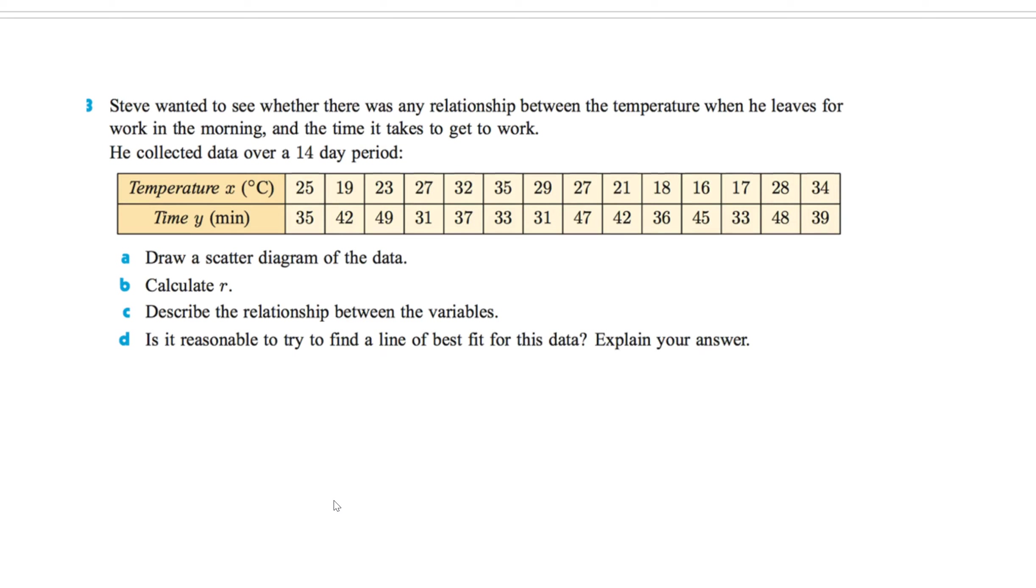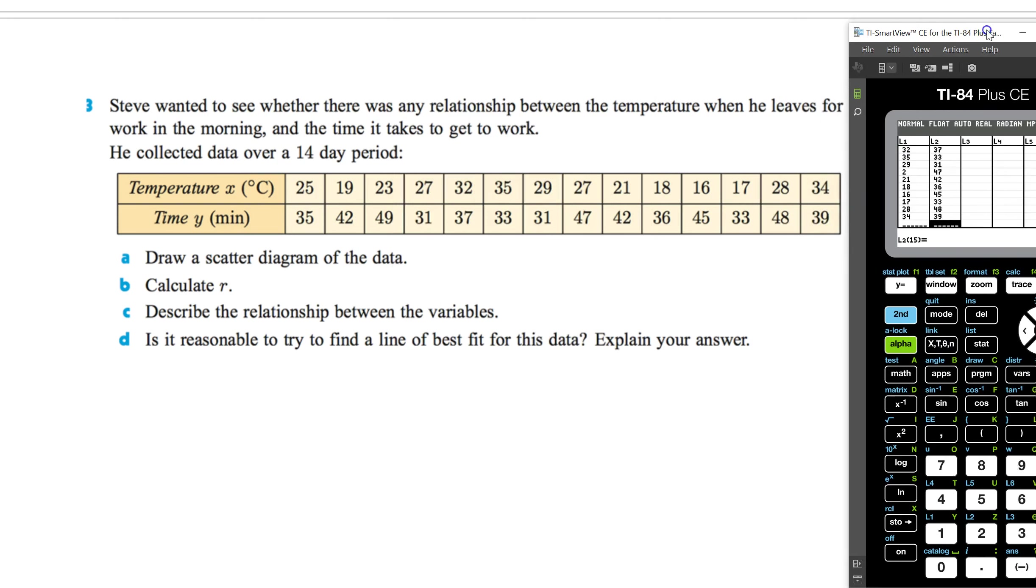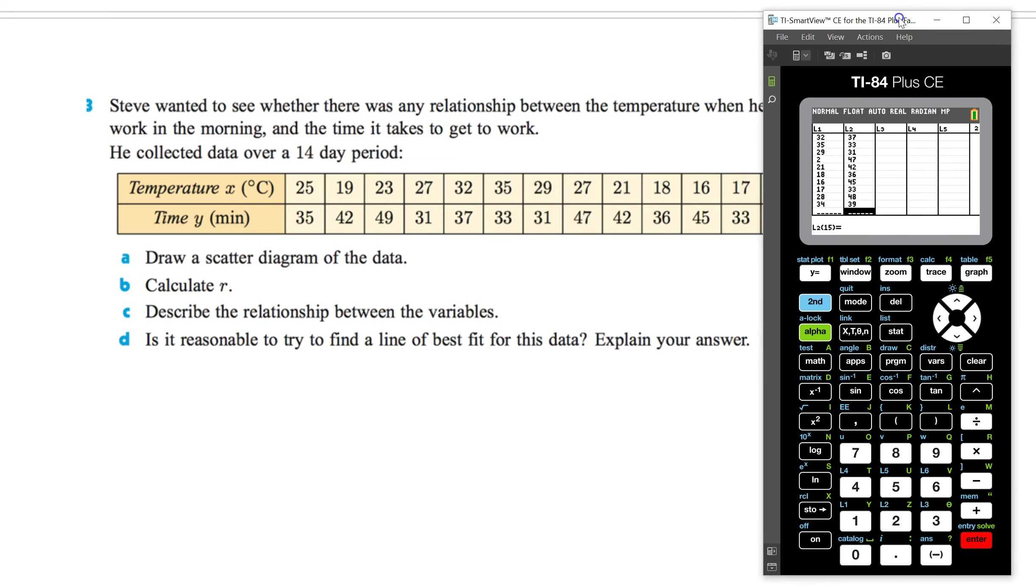Steve wants to see whether there was any relationship between the temperature when he leaves for work in the morning and time it takes to get to work. So you collect the data over a 14-day period. Draw a scatter diagram of the data. Again, we're going to do all this in our calculator. Calculate R. Describe the relationship between the variables. It is the reason to find the line of best fitting data to explain your answer. So let's do this. I'm going to plug all that into my calculator first. I'm going to save you the trouble. I'm going to do it off screen. So there I go. All the data is entered in.